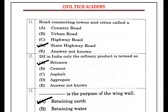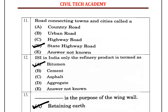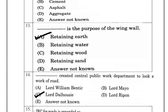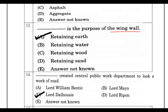The road connecting towns and cities is called a straight highway road. The purpose of a wing wall is to retain the earth — wing walls are built to hold back the earth on the sides of structures such as bridges and culverts.